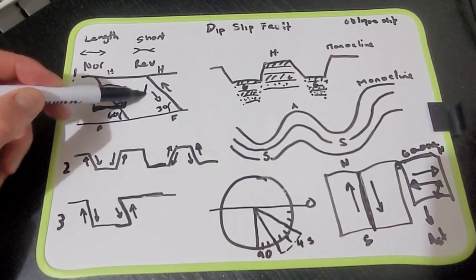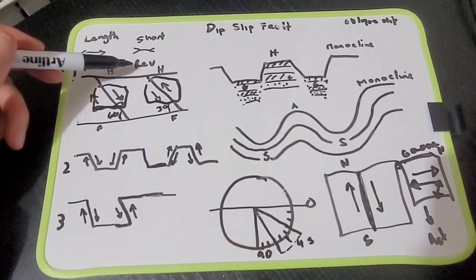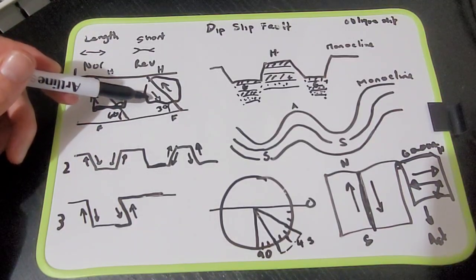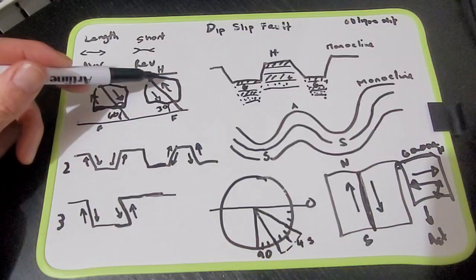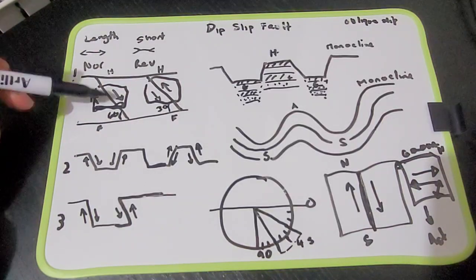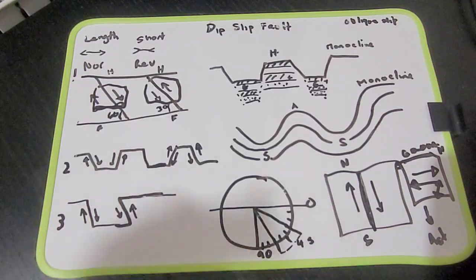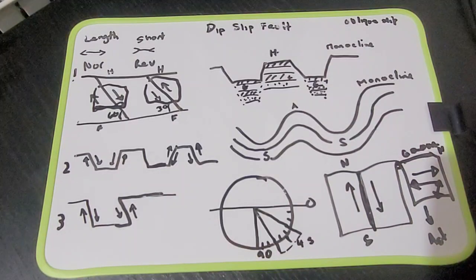And the same with this we have a mine shaft there. You can see that a reverse fault, the foot wall is going down, the hanging wall is going up. Normal fault, the hanging wall is going down, the foot wall is going up. So they're two of the basic concepts that you should get your head around.